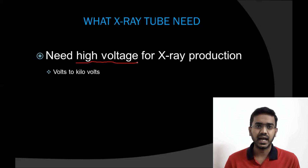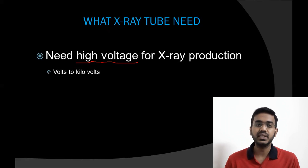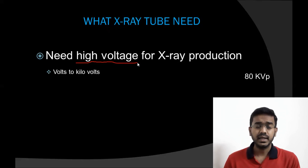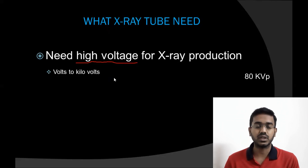What is that high voltage? What will be the technique that you set for a chest X-ray? It will be around 80 kVp. kVp is kilo voltage peak — kilo is 1000. So 80 × 1000 means we need 80,000 volts to perform that X-ray.